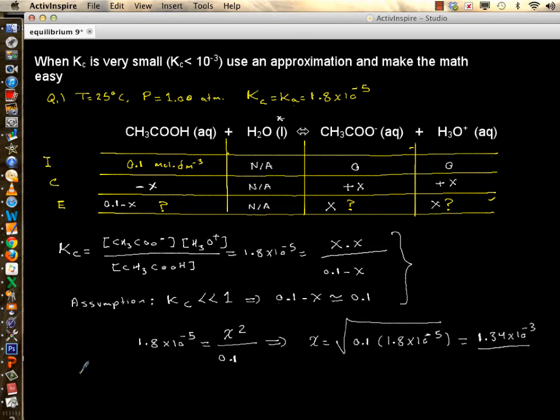So now the concentration of your acid at equilibrium is approximately 0.1, or 0.099. The concentration of CH3COO at equilibrium is equal to the concentration of hydronium, and it's 1.34 times 10 to minus 3 mole per decimeter cubed.